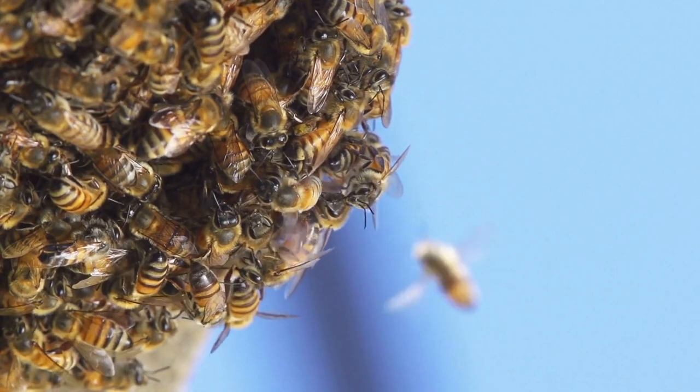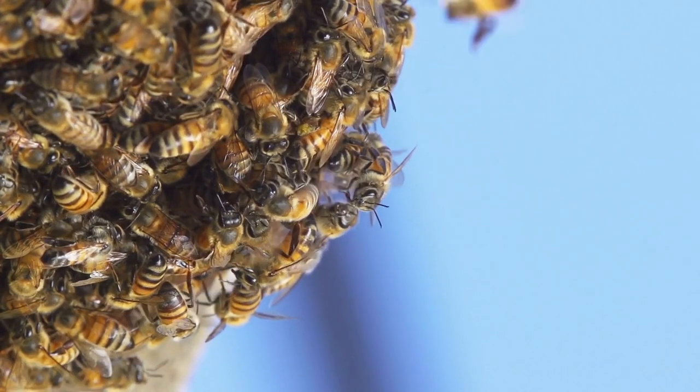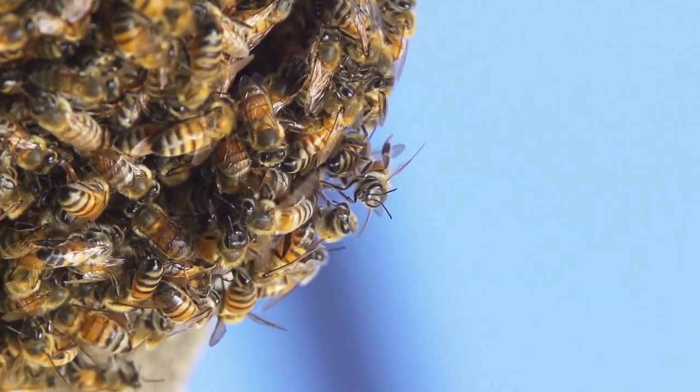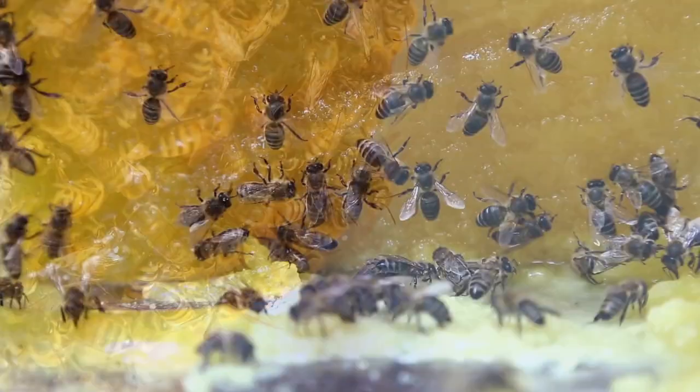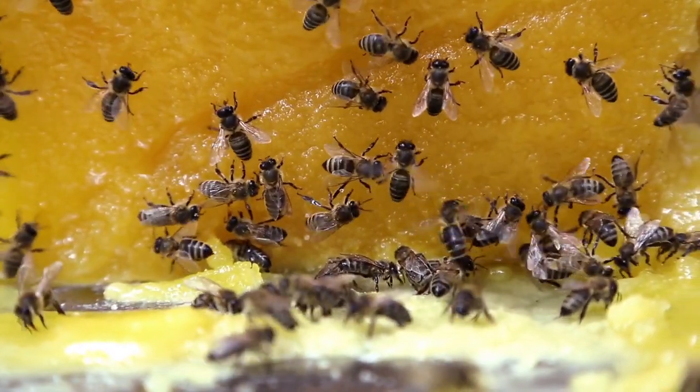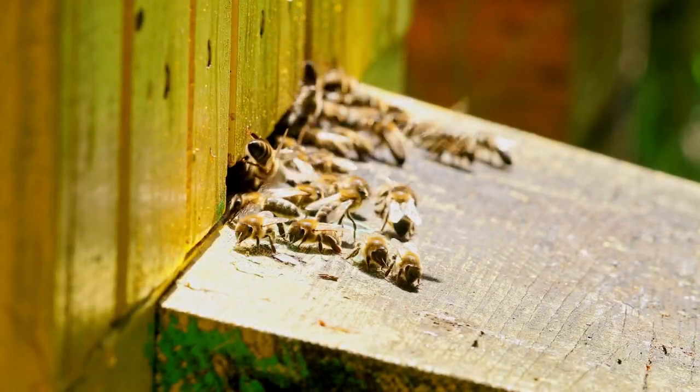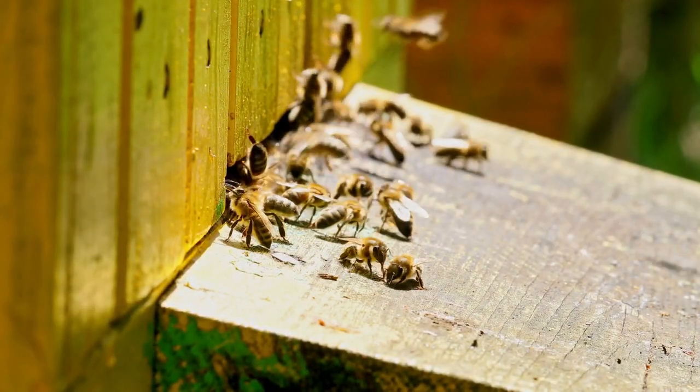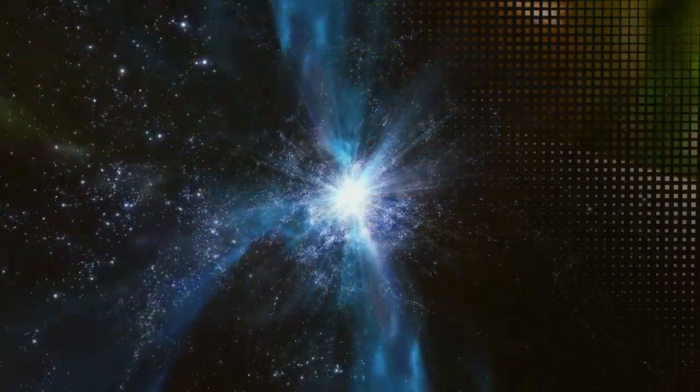The bees use a complex communication system to let each other know where food is or where a new hive should be built. They do this by pheromones and also by performing a dance known as the waggle dance. The dance tells the other bees the direction and distance of the food source or new hive site.